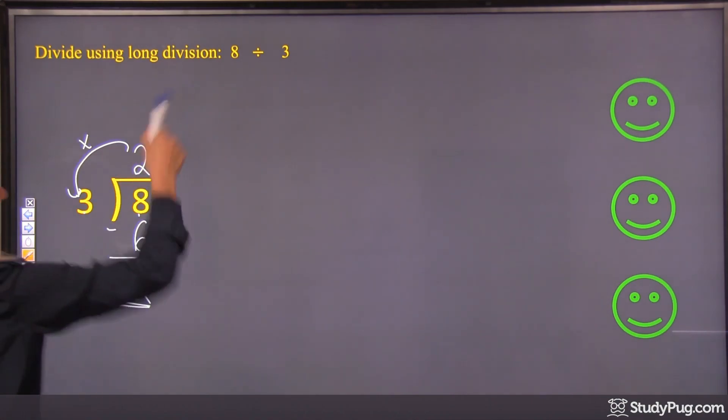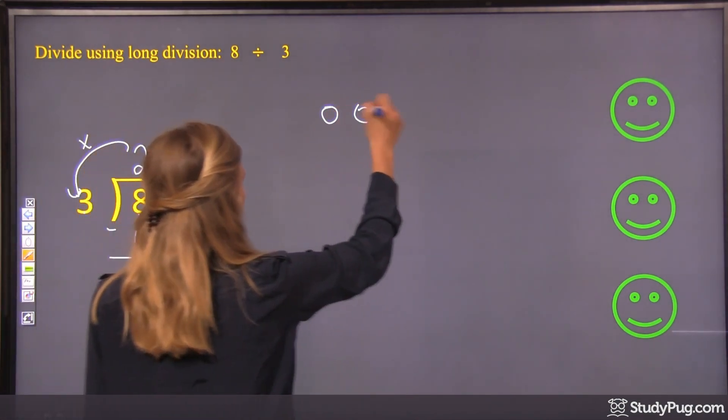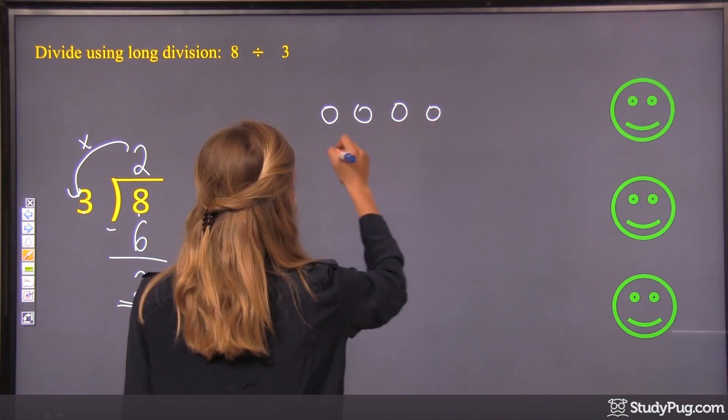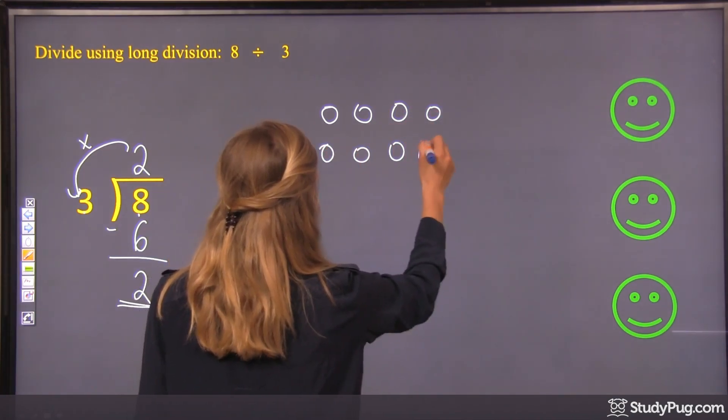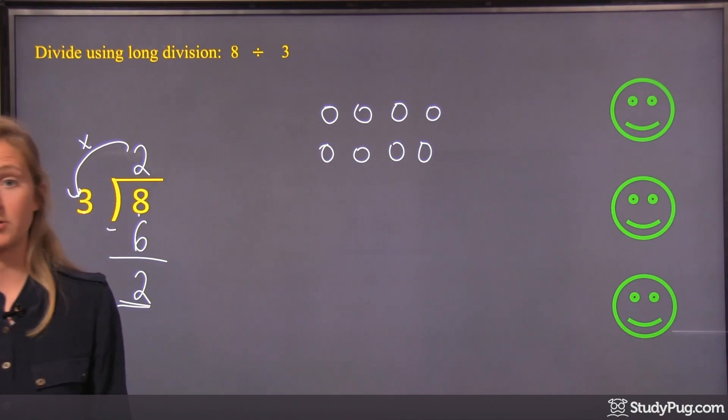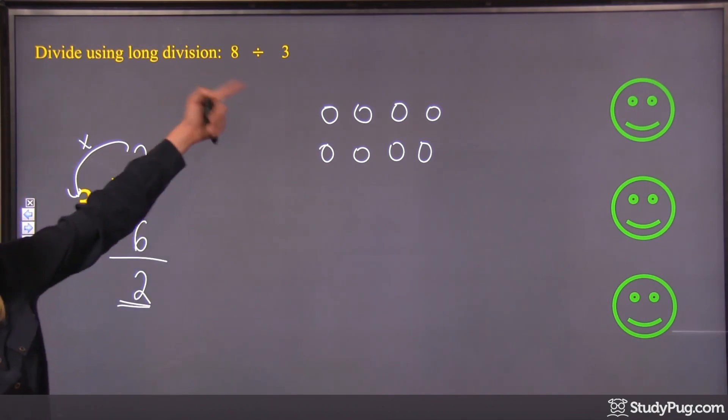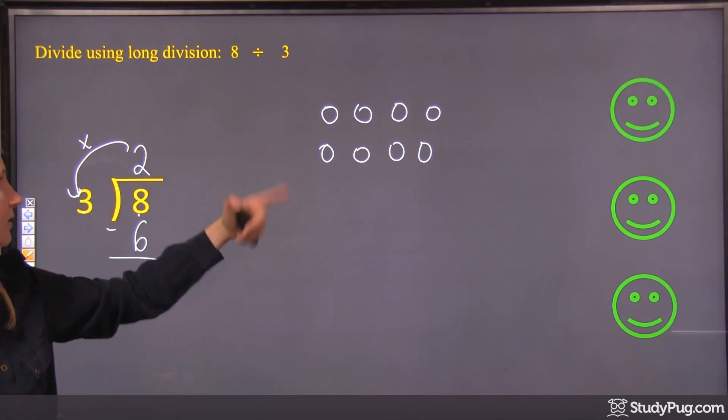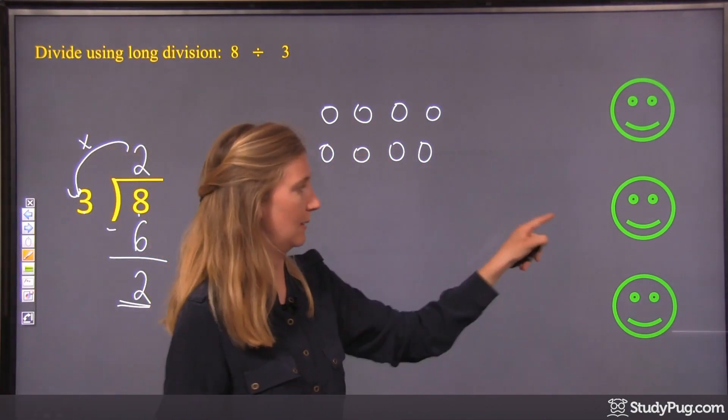And we have 8 cookies. There's 8 cookies to divide amongst those 3 people, right? This is what that question is. 8 divided by 3. So we have 8 cookies and we're dividing them amongst 3 people.